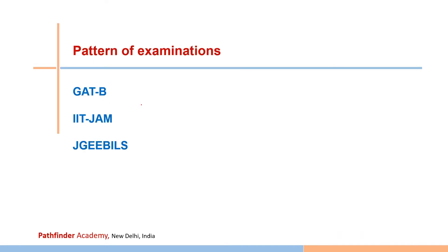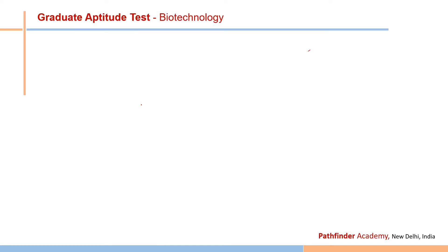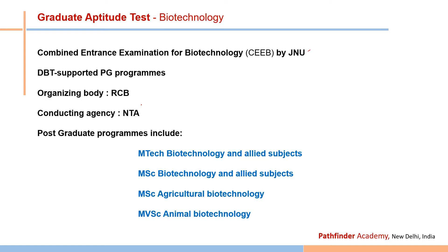The Graduate Aptitude Test (GAT-B) was earlier conducted by JNU as the Combined Entrance Examination for Biotechnology. It is a DBT-supported PG program, organized by RCB and conducted by NTA. On the basis of GAT-B, you can join M.Tech Biotechnology, MSc Biotechnology and allied subjects, MSc Agriculture Biotechnology, and MSc Veterinary Science/Animal Biotechnology — four different program types.